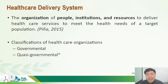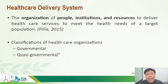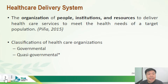The second group is quasi-governmental, referring to organizations that have some official health responsibilities but operate in part like a voluntary health organization. One good example is the Red Cross — the government acknowledges it as the official blood donation group of the country, but it functions as a voluntary group rather than part of the government.